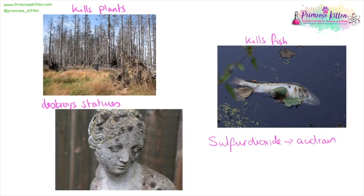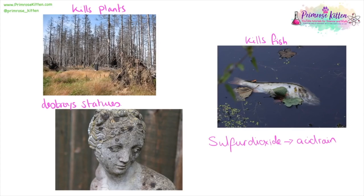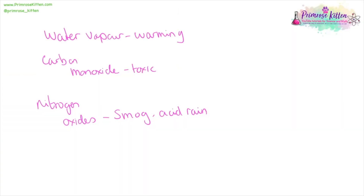One of the major pollutants is sulphur dioxide. When this goes up into the atmosphere and dissolves in clouds, it comes back down as acid rain, which affects a wide range of things: lakes and ponds that become too acidic will see fish and plants die; plants rained on with acid will die; and it destroys limestone statues which dissolve in acid rain. Too much carbon in the air leads to large levels of smog and global dimming, particularly prevalent in developing countries. Carbon monoxide is a toxic gas, and nitrogen oxides contribute to both smog and acid rain.